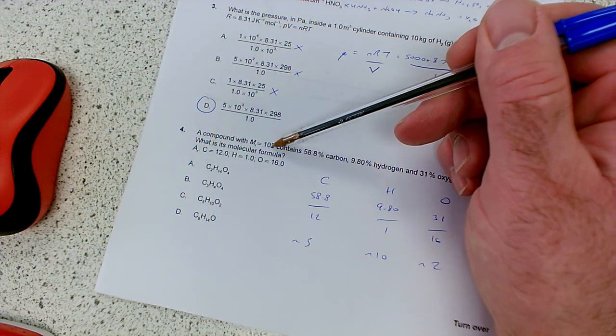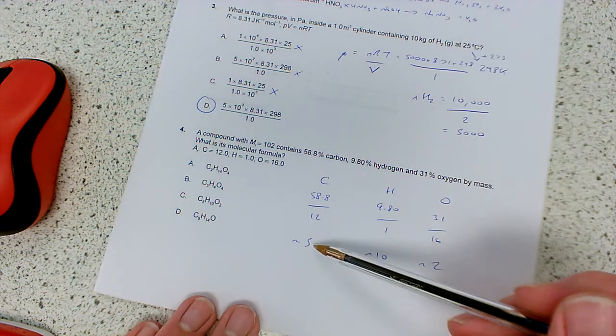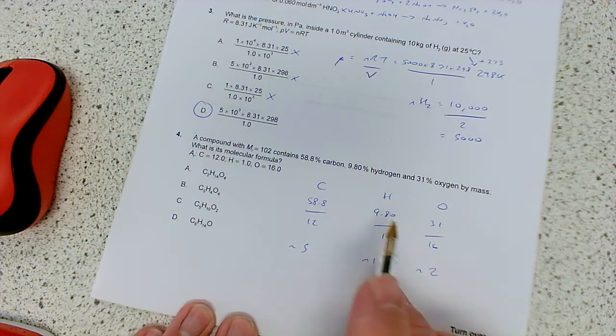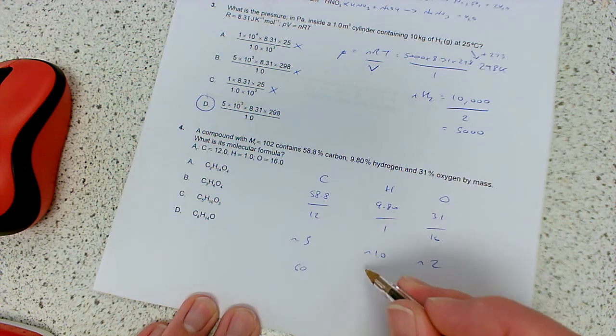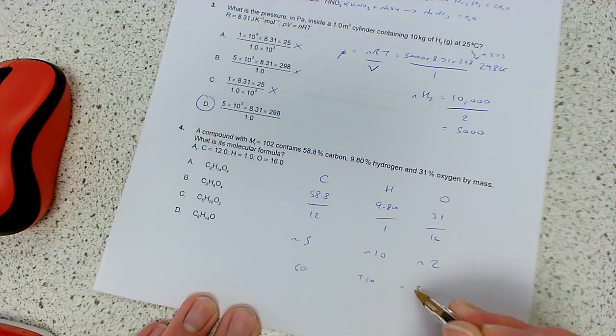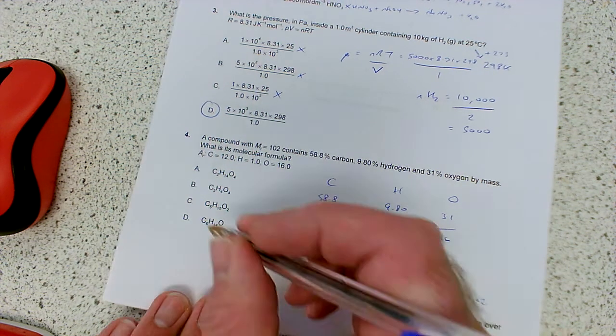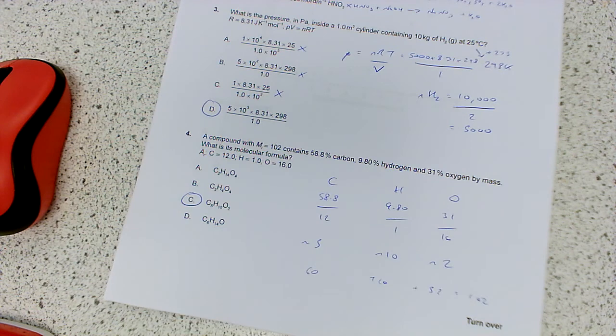Let's just check that gives the correct molecular formula mass, so that'll be 5 times 12, and it should do, because I think, well these add up to 100, and that's not far off 100, because we've basically kept the numbers. So 5 times 12 would be 60, plus 10, plus 32, that equals 102, so it's as simple as that. We don't need to do anything more complicated than that.